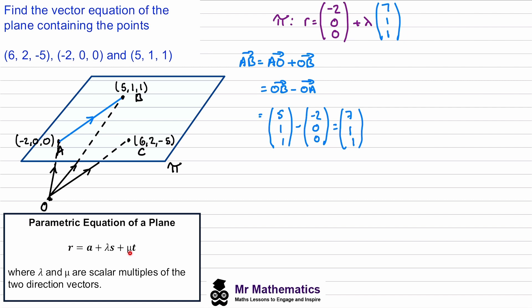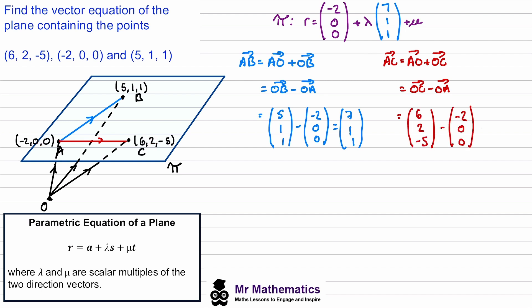Then we need our second parameter mu, plus a different non-parallel direction vector t. For this I'll use the vector a to c. So a to c equals a to origin plus origin to c, which we can write as origin-to-c minus origin-to-a. Substituting in the two position vectors gives us our second direction vector. We substitute this back into our equation, and this is the parametric equation of that plane.